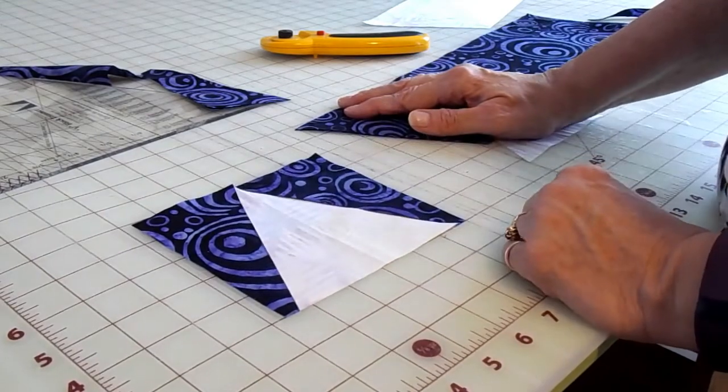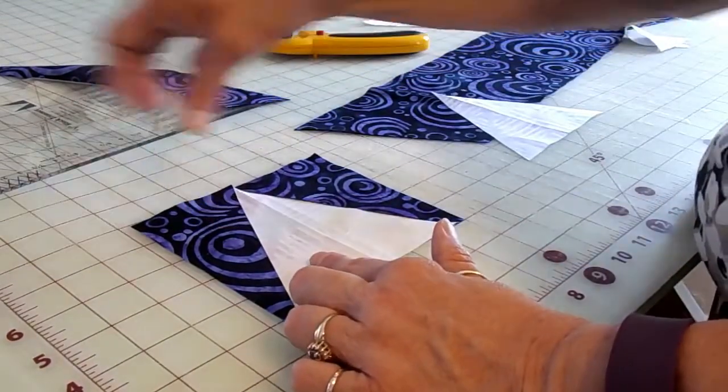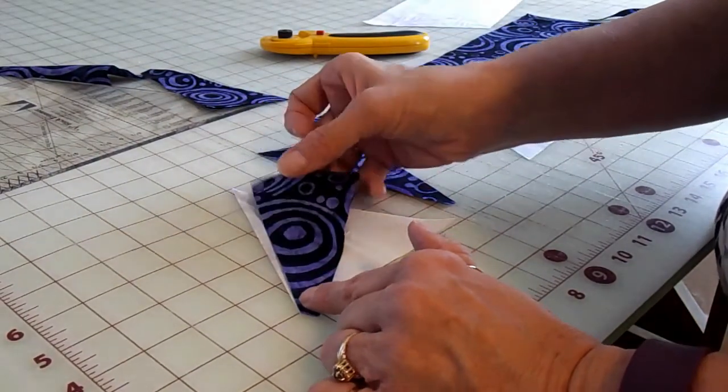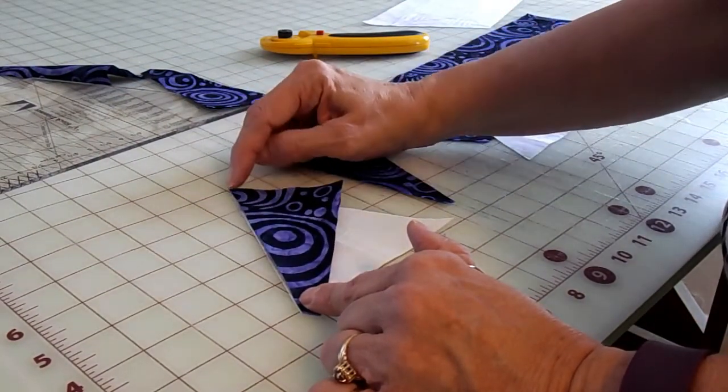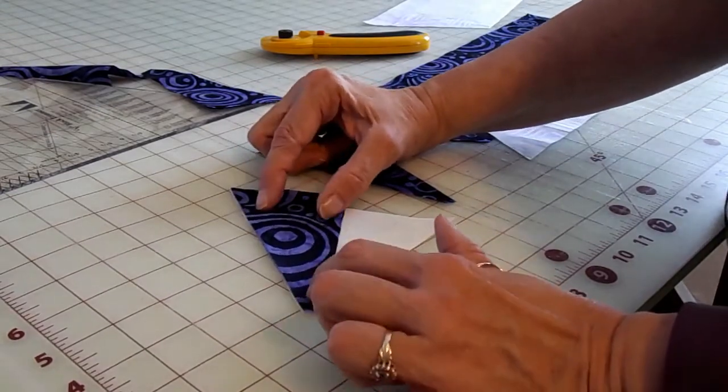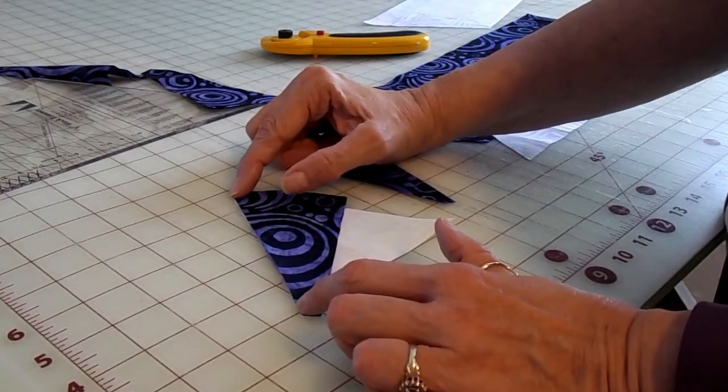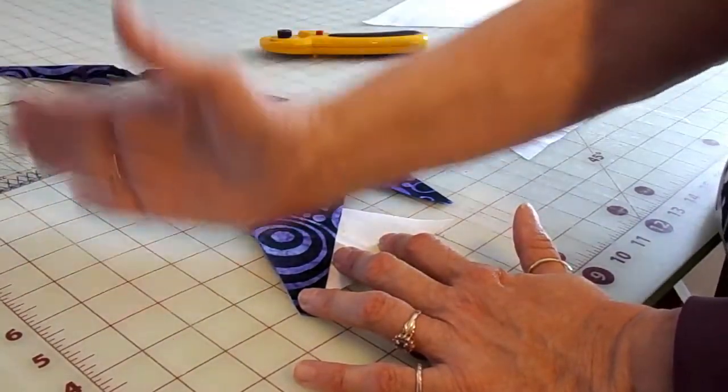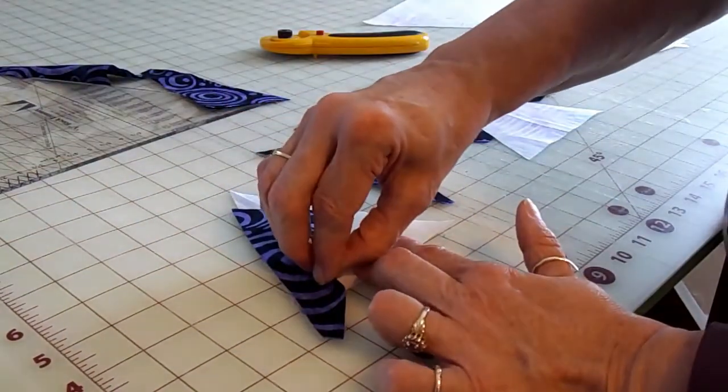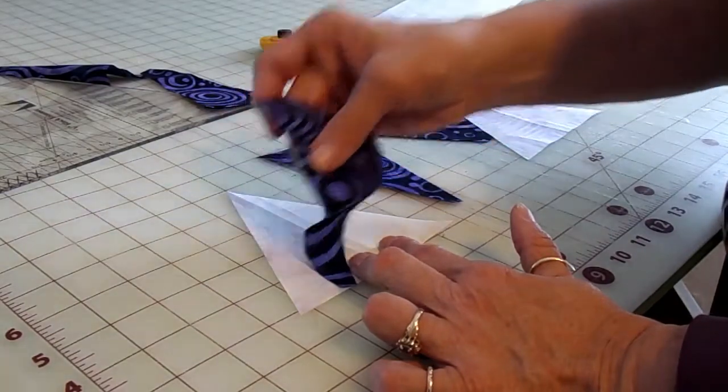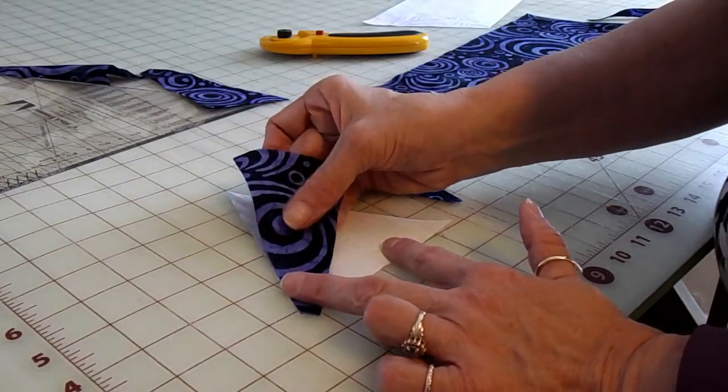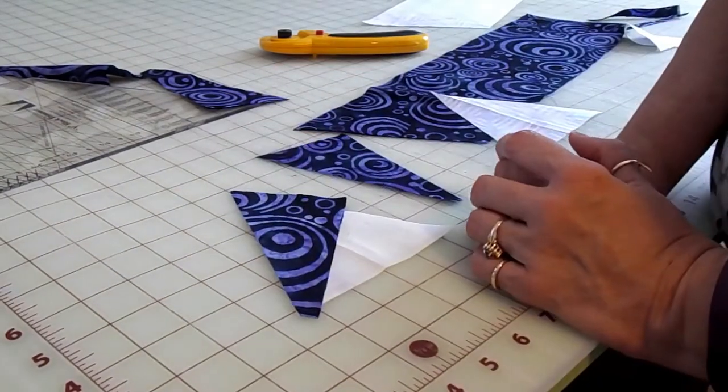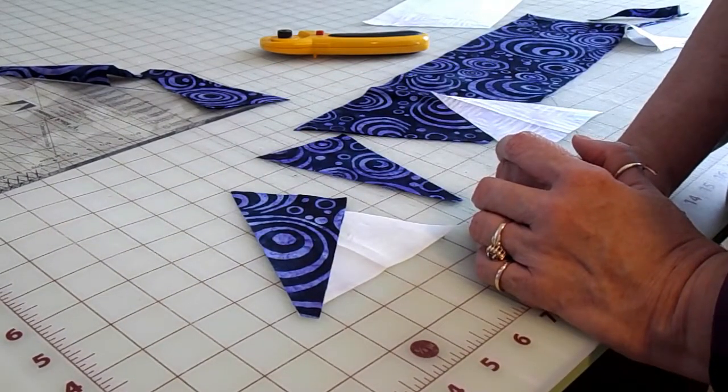You're going to sew all of the right-hand sides on first and press out, and then sew all of the left sides on and press out. When you sew them, you are going to line up your fabric point to point. There's nothing hanging off the edge of the point. You don't have to do this with this ruler to end up with perfect blocks.